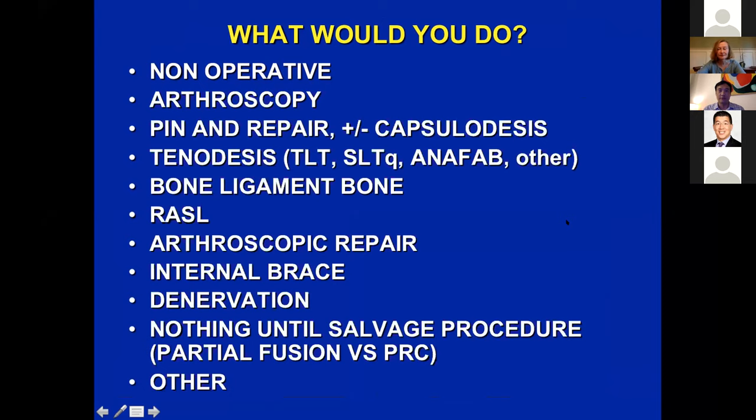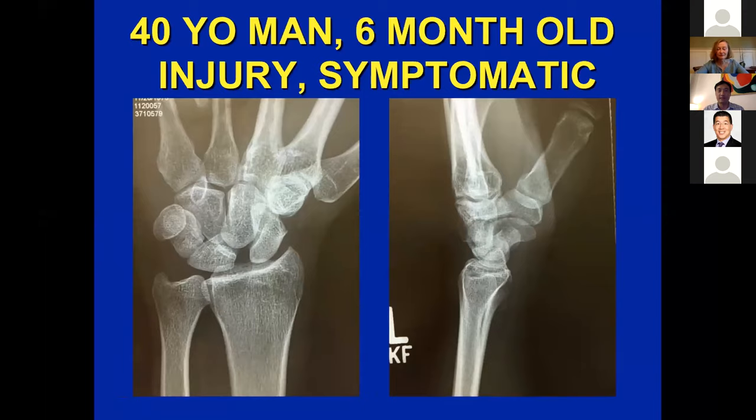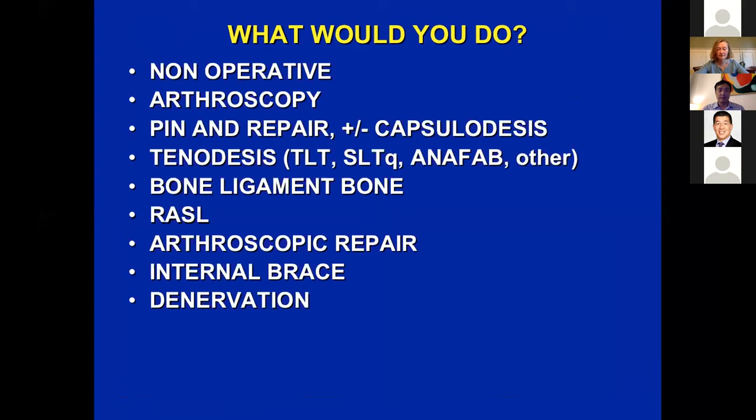Tons of options. But let's say it's not acute — it's six months old and symptomatic. You have that gap, flexed scaphoid, DISI. The same kind of options are still there. A landmark paper in 1972 out of the Mayo Clinic talked about traumatic instability of the wrist: defined as a symptomatic condition where the patient can't bear loads and has abnormal kinematics.